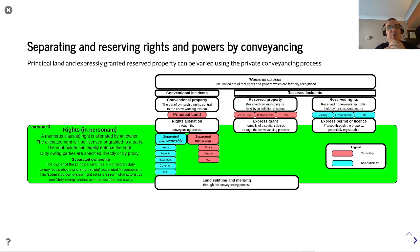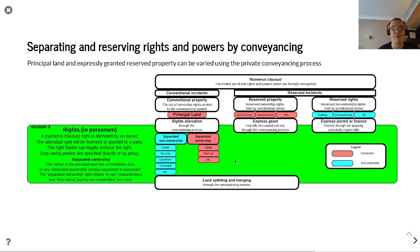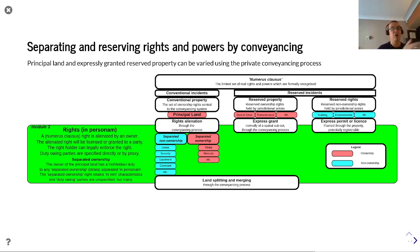You can then start to separate out and reserve some of the rights and powers by conveyancing — separating out leases, securities, easements, covenants, or if it's ownership, sub-ownership like strata and minerals. The whole conveyancing system is an in personam system — you have a known owner who is transferring rights to a known beneficiary.